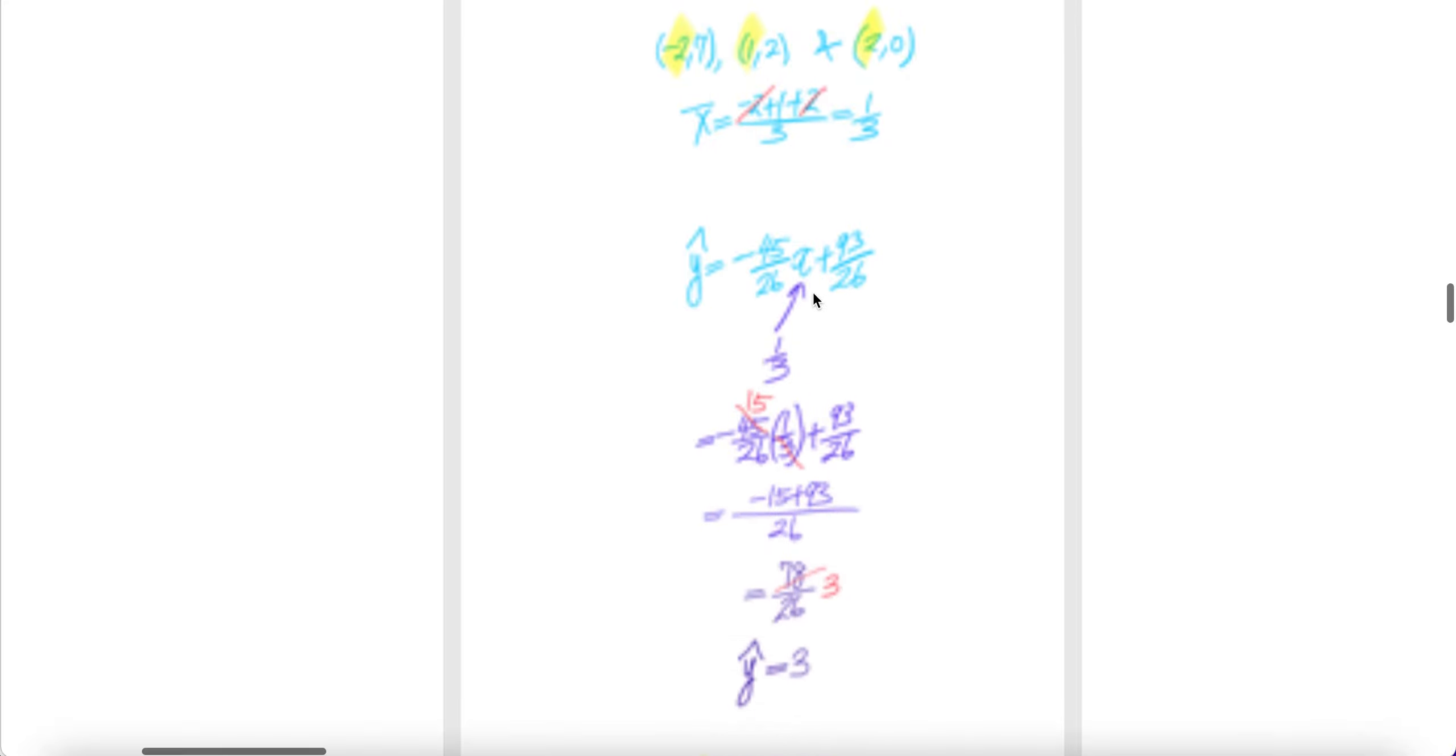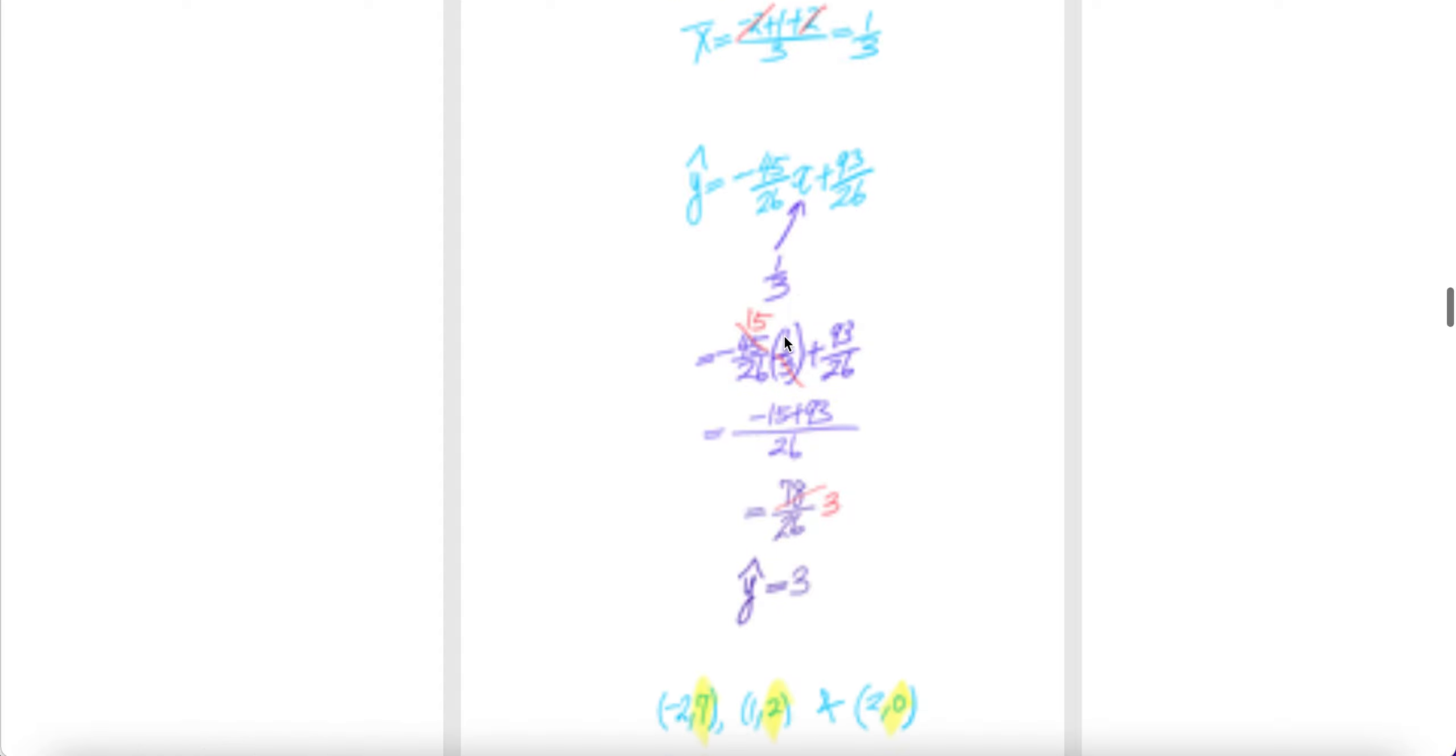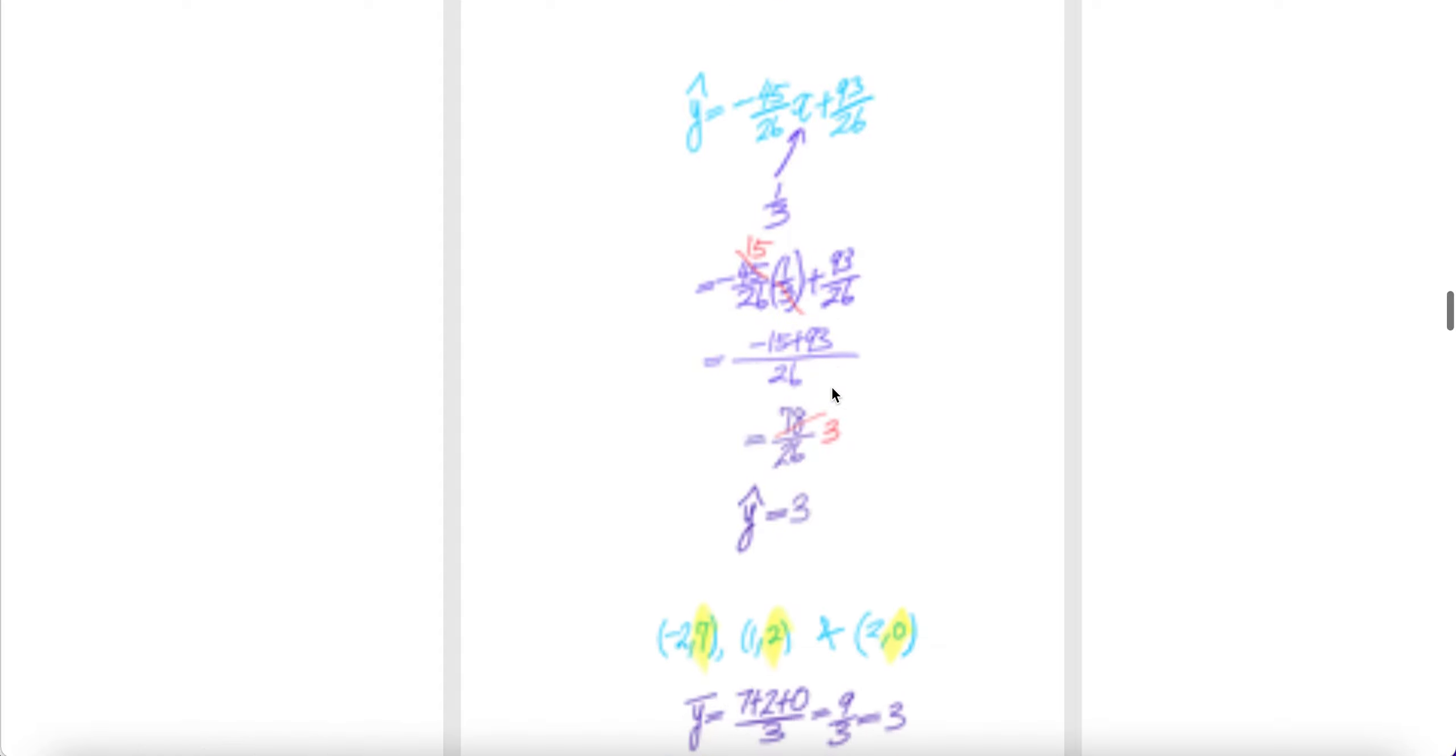Now, put bar x, the one third here, into the predicted line. Put it there here. Everything here is the same. And then when you compute, the y hat is equal to three.